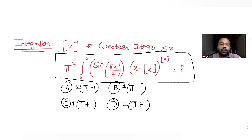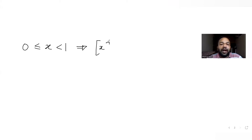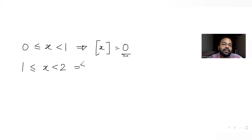Let's figure out the value of this integral. First, let's understand the greatest integer function. Since our limits go from x = 0 to x = 2, for all values of x from 0 up to just less than 1, the greatest integer function equals zero. From x = 1 up to just less than 2, the value of the greatest integer function is equal to one.